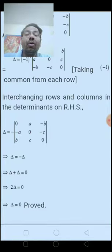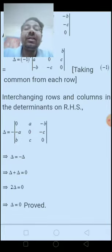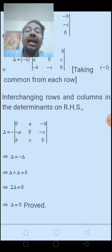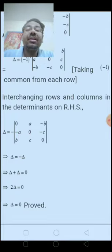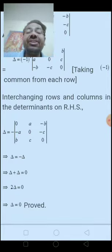If we interchange row and columns, you know very well the properties of that. If any determinant row and columns are interchanged, the determinant value is not changed.